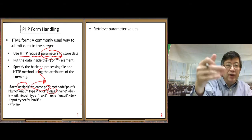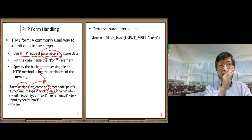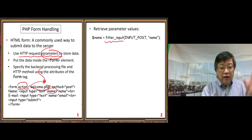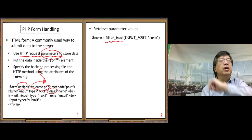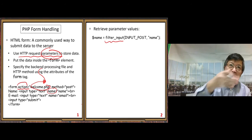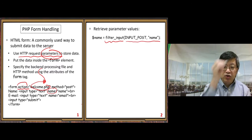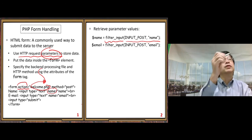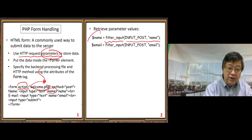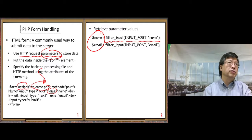Next, retrieve parameter values in PHP. Remember, for user input we should use the filter_input function to make our data more secure, because a user can embed harmful code to attack our database. So we use filter_input to retrieve the data. Similarly for the email field, we do it the same way. After that, we can use the parameter values to do our data processing.